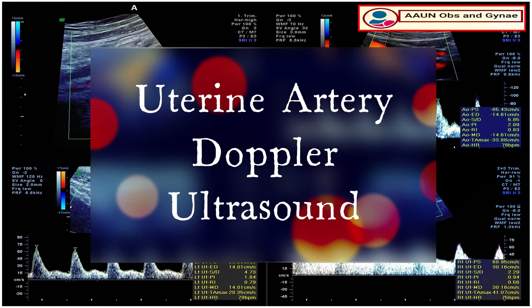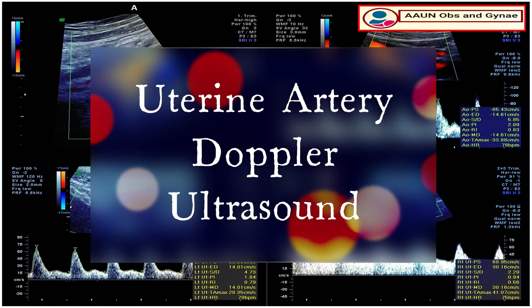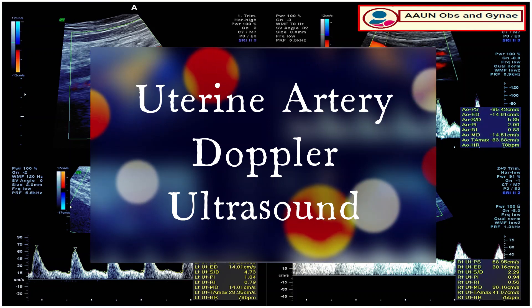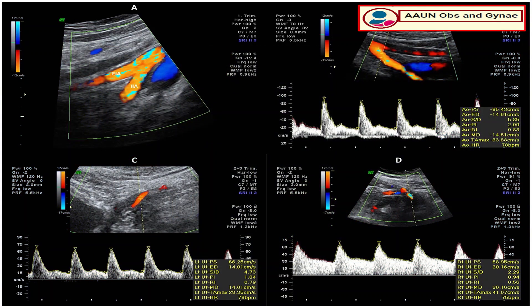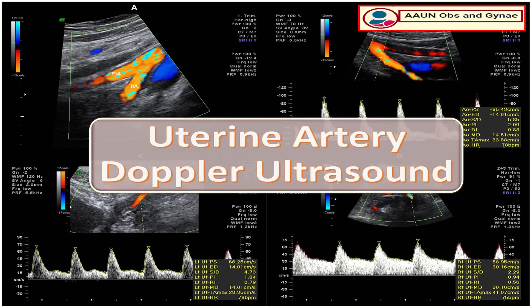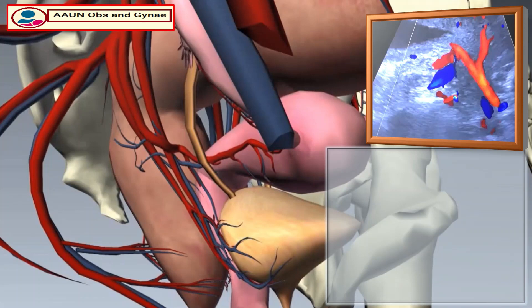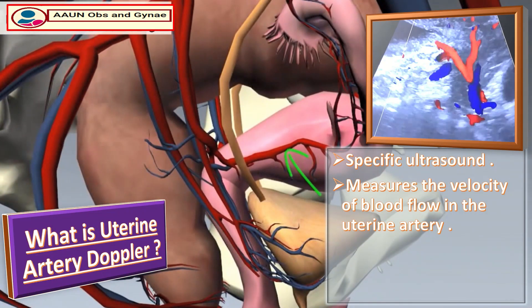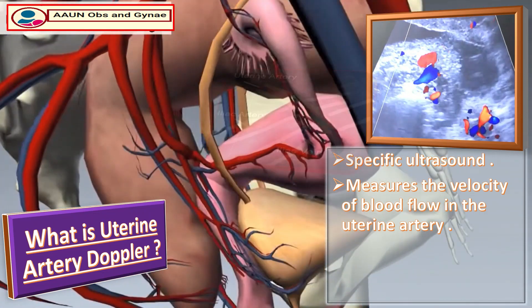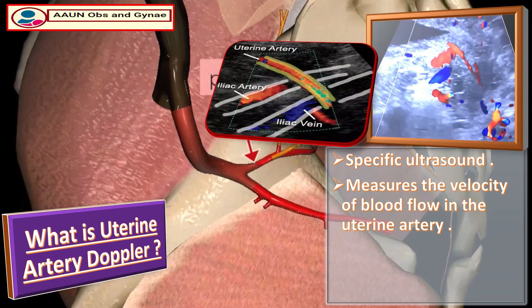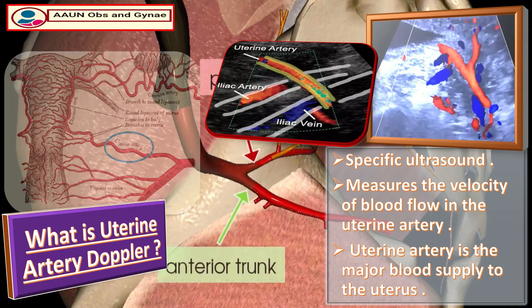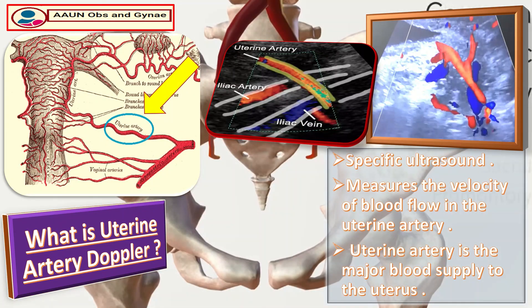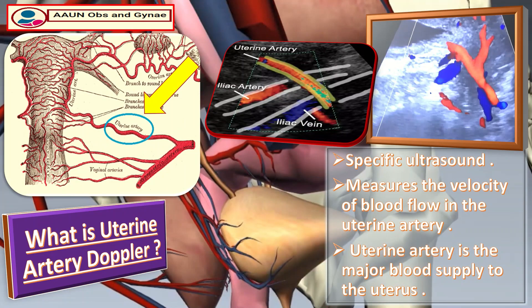After discussing the umbilical artery Doppler, it is time to discuss the uterine artery Doppler ultrasound. Uterine artery Doppler is a specific ultrasound which measures the velocity of blood flow in the uterine artery. The uterine artery is the major blood supply to the uterus, arising from the anterior division of the internal iliac artery.